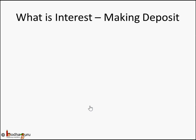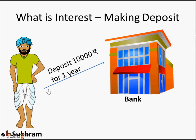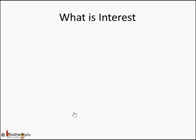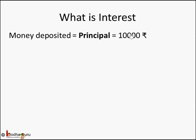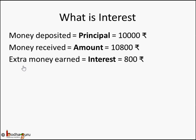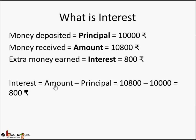Now let's take the case of making a deposit. Sukram deposited 10,000 rupees for one year and the bank returned him 10,800 rupees after one year. The money deposited — the initial amount of 10,000 rupees — is called principal. The money received from the bank — 10,800 rupees at the end of one year — is called amount. The extra money Sukram earned, 10,800 minus 10,000, is interest: 800 rupees.